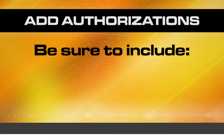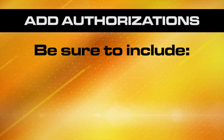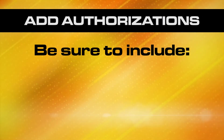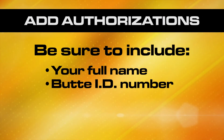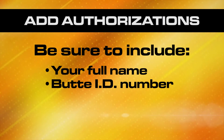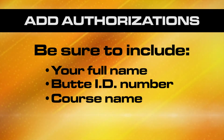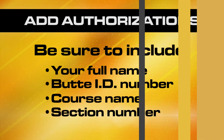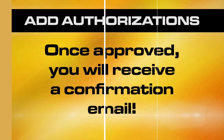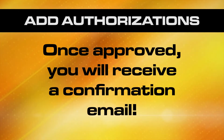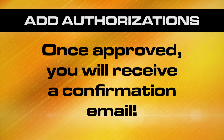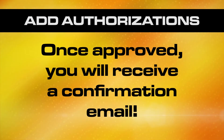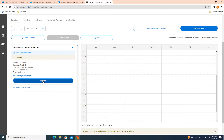When you email an add request to the instructor, be sure to include your full name, UD number, the course name, and the section number of the class you want to add. Once the instructor approves the authorization, you will receive a confirmation email. You can now register in self-service and add your course.